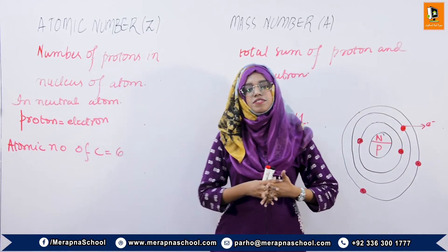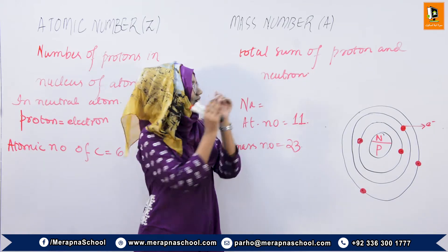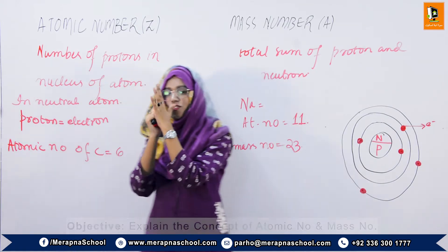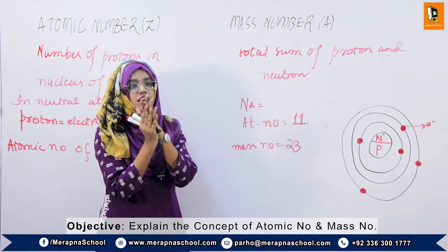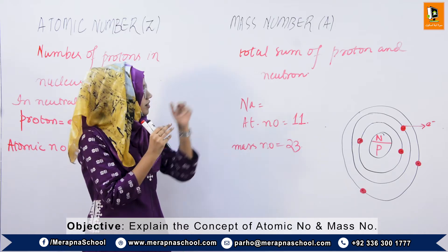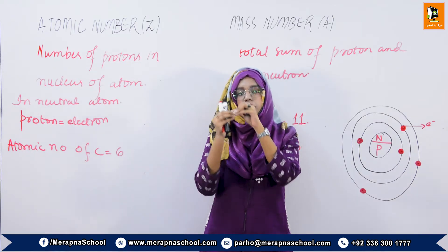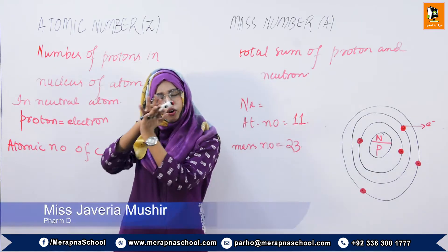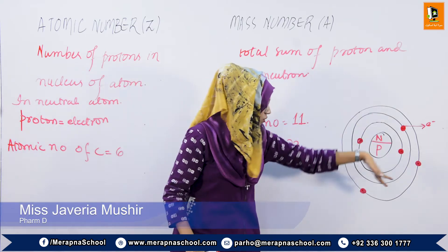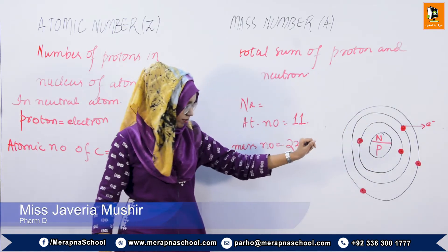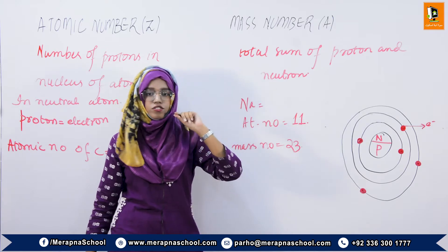Assalamu alaikum. In today's session we will start the atomic number and mass number — what is atomic number and what is mass number. Before understanding both of these, we have the concept of fundamental particles of atom. As we have already studied them, we get an overview here of what is electron, what is proton, and what is neutron.